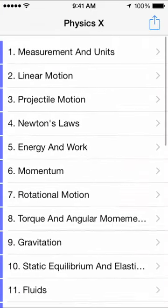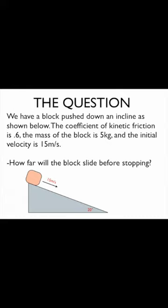Physics X also includes over 100 videos which solve systematically the most important questions in introductory physics. The coefficient of kinetic friction is 0.6, the mass of the block is 5 kilograms, and the initial velocity is 15 meters per second.